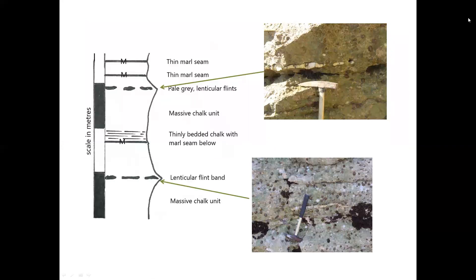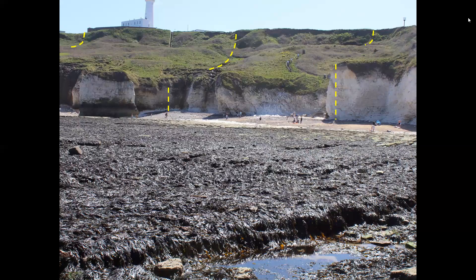On Kindle Scar, the lower part of the cliff contains the highest flints of the Burnham Chalk Formation, known as the High Stacks Flint, and so marks the boundary with the overlying Flamborough Formation. Looking back from Kindle Scar to the steps from which we accessed the shore, we can see again the different profiles presented by the chalk cliffs and the overlying glacial deposits.